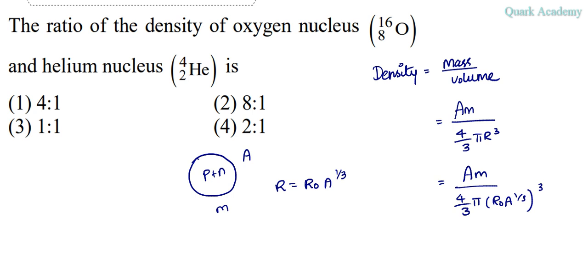So if we simplify this, then we'll get A m by 4 by 3 pi r0 cube A. So this A and A gets cancelled and we're left with m 4 by 3 pi r0 cube.